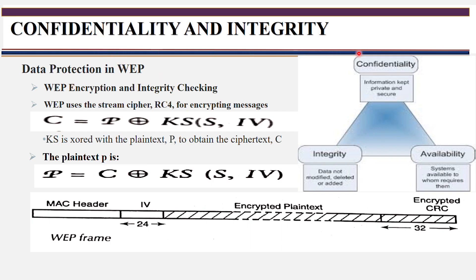We will see confidentiality and integrity in WEP and how it failed. Confidentiality means keeping information private and secure — what you want to transfer between stations to access point and between access point to server must be private and secure. Integrity means the data you communicate is not modified, deleted, or added. The data you transfer should be received as it is — that is called integrity.